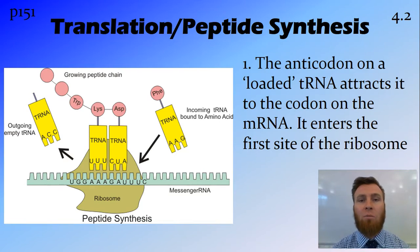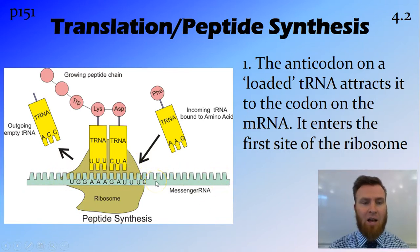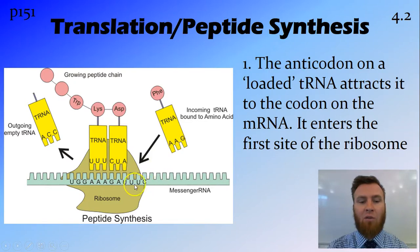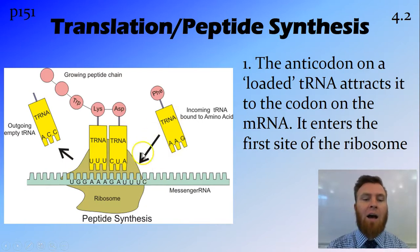Now let's get into the translation, or the actual polypeptide synthesis. This occurs in the ribosome. We can see here we've got the ribosome, we've got our strand of mRNA — messenger RNA — and we've got our tRNA. The tRNA is shown in blocks rather than in that three-leaf clover shape, just for ease of diagram. We can see we've got our anticodon on the bottom and our amino acid at the top. This is a loaded tRNA in that it's got an amino acid attached to the top of it. The anticodon is attracted, because of its affinity, for the codon on the mRNA — AAG-UUC — so it's going to enter into the first site of the ribosome and bind with that codon.